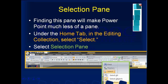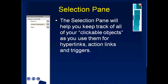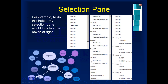One thing you may appreciate is that there are a lot of objects in a PowerPoint, and it can be very hard to keep track of object number 46. So it's very helpful to understand the Selection Pane. You can find it on the Home tab: in the Editing section, click Select, then choose Selection Pane. The Selection Pane helps you keep track of all your clickable objects.